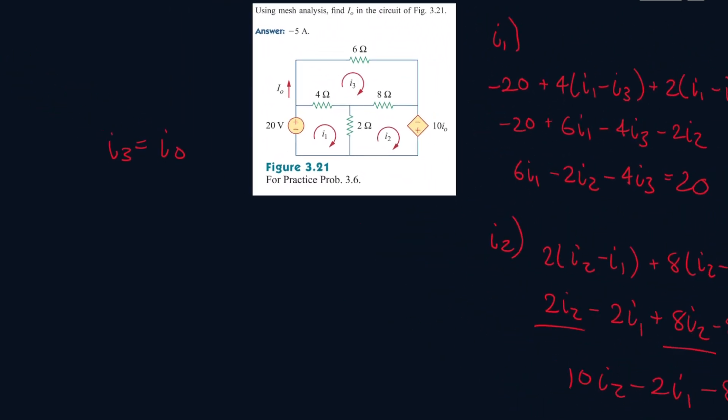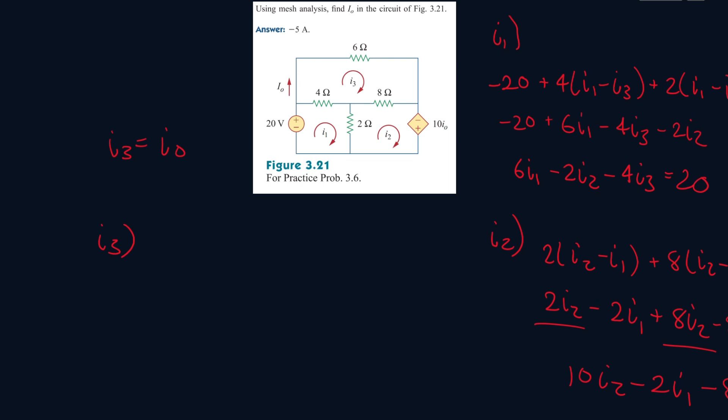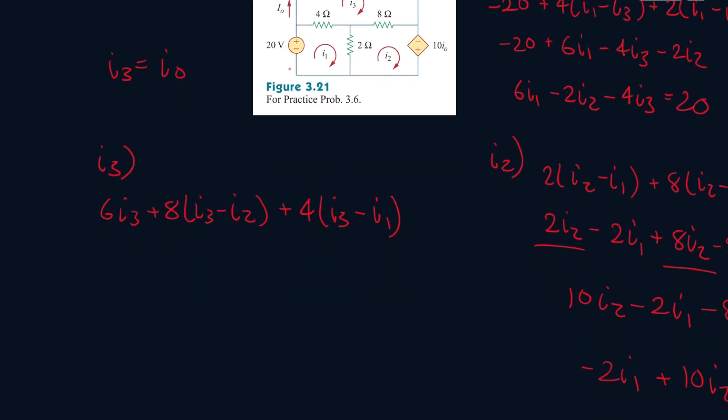So let's continue finishing the I3 mesh. So 6I3 plus 8(I3 minus I2) plus 4(I3 minus I1). Simplifying it, we have 6I3 plus 8I3 minus 8I2 plus 4I3 minus 4I1. And let's collect like terms.